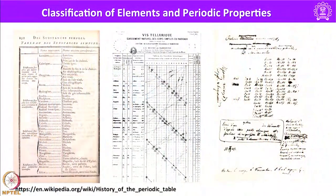Mendeleev also predicted the properties of some unknown elements and left gaps in the table at appropriate places. For example, he left gaps below aluminum and silicon and called the yet-to-be-discovered elements eka-aluminum and eka-silicon. He predicted the existence of gallium and germanium and described their general properties before they were discovered. This shows the remarkable early work of Mendeleev before he fully proposed the periodic table.